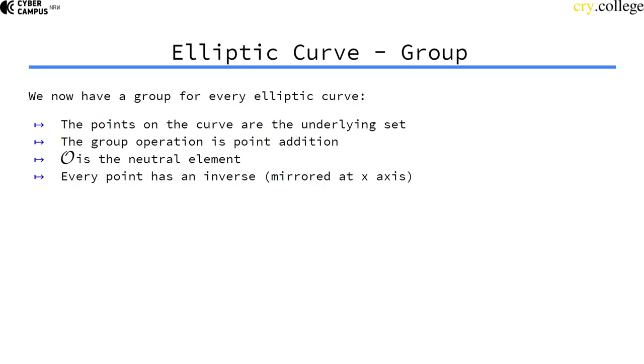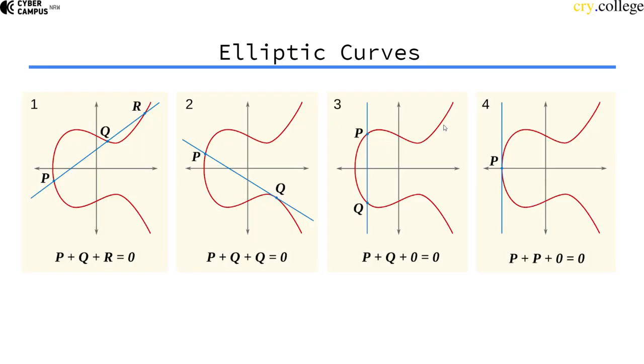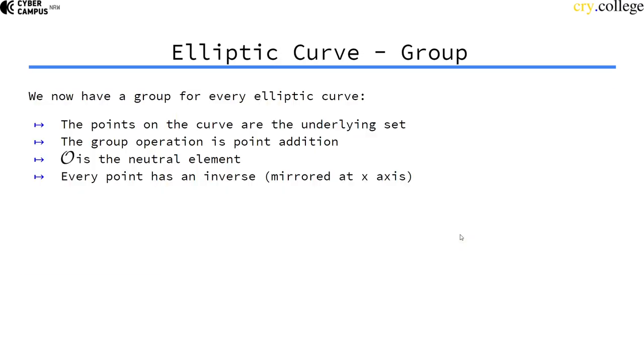So now we actually have a group for all elliptic curves. Once we have specified the curve parameters a and b, this group is the points on the curve as the underlying set. So all points that lay on the curve's equation. The group operation is point addition, adding points to each other. The point at infinity is the neutral element.